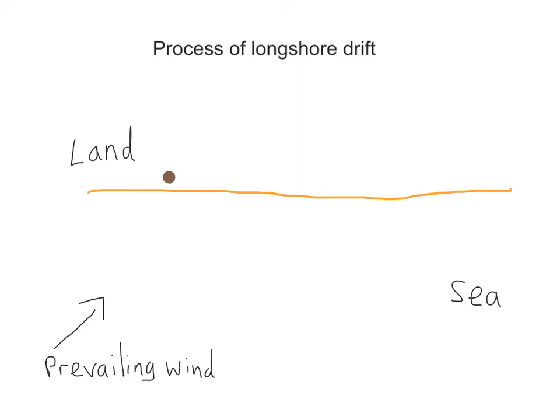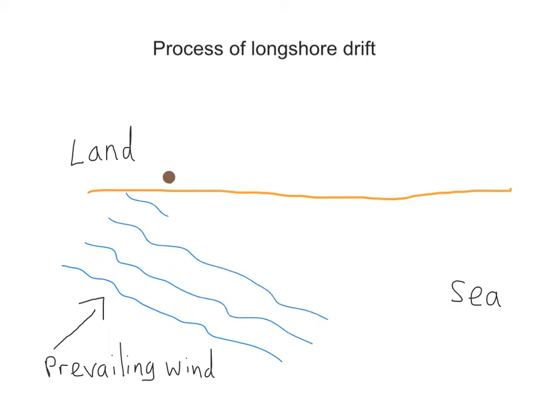In this diagram here the prevailing wind is from the southwest, and this means that any waves which come towards the coastline will come in from the southwest.